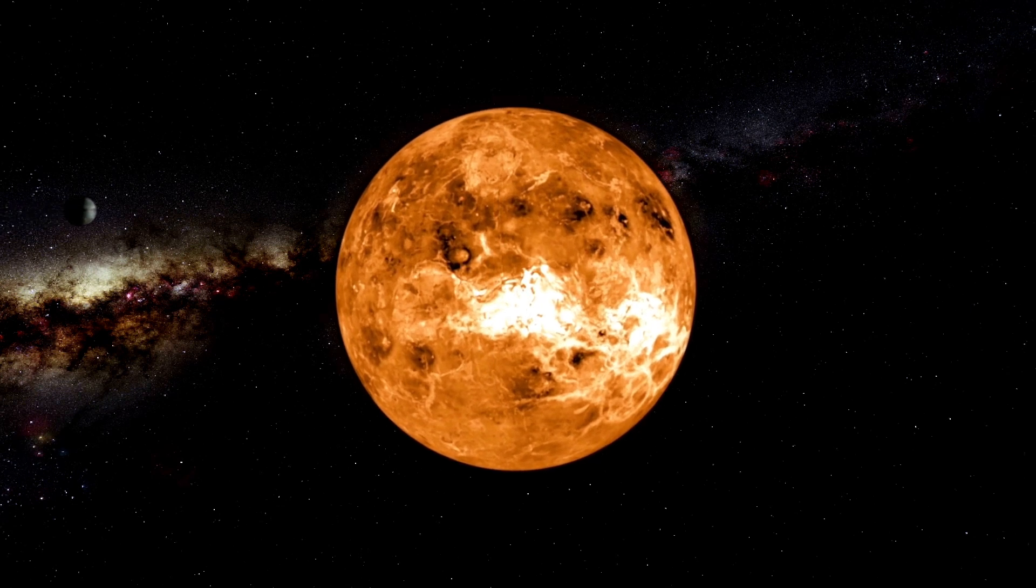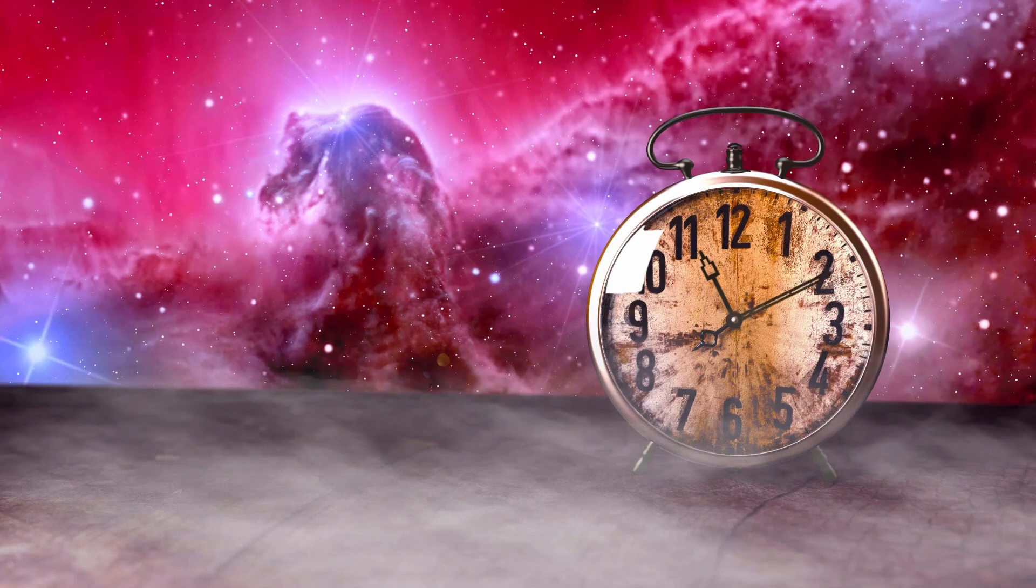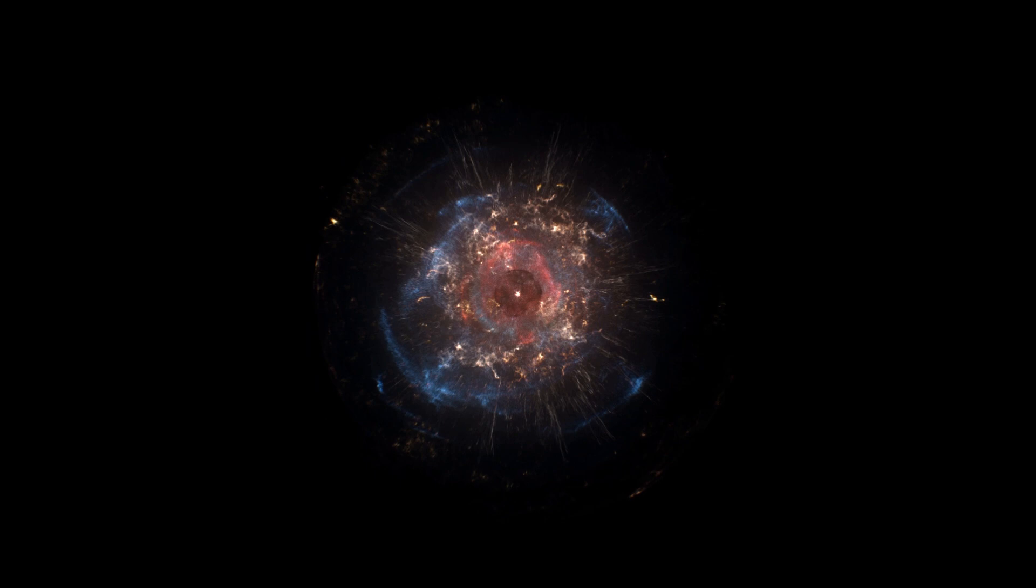Its reddish hue is due to its cooler surface temperature, around 3,500 Kelvin, compared to the sun's 5,500 Kelvin. This cooler temperature causes Betelgeuse to emit red light, offering clues about its internal processes.